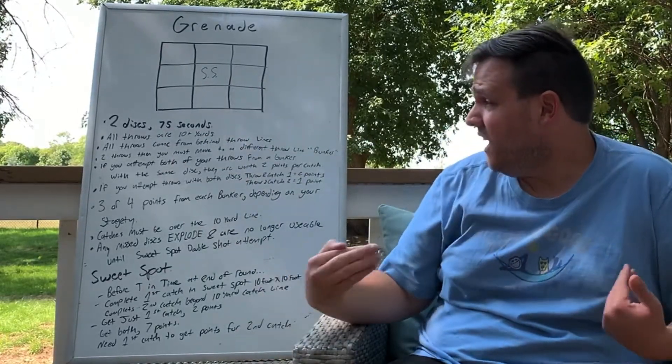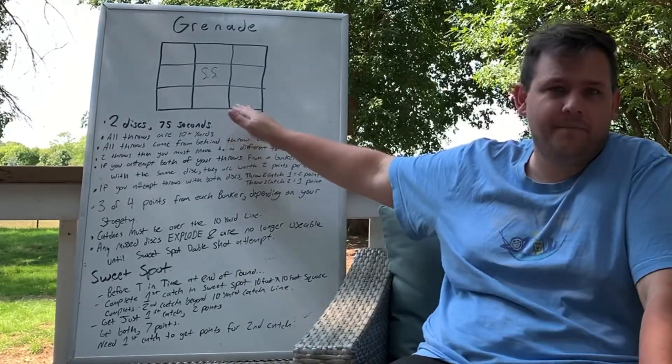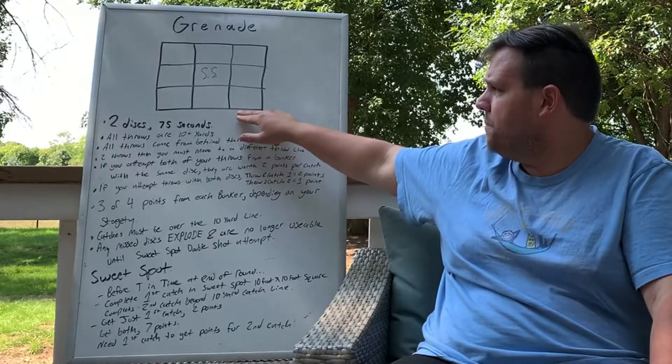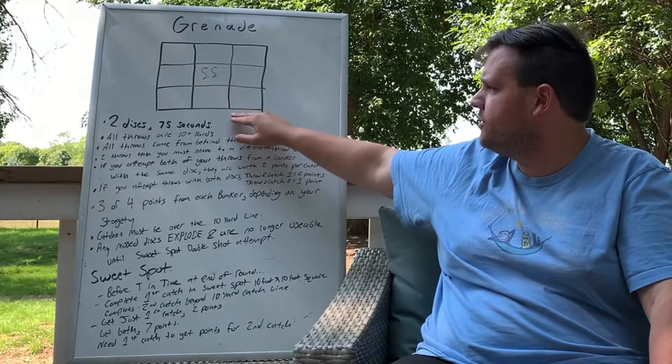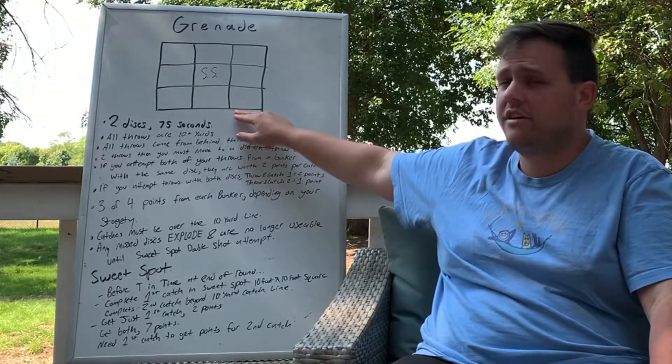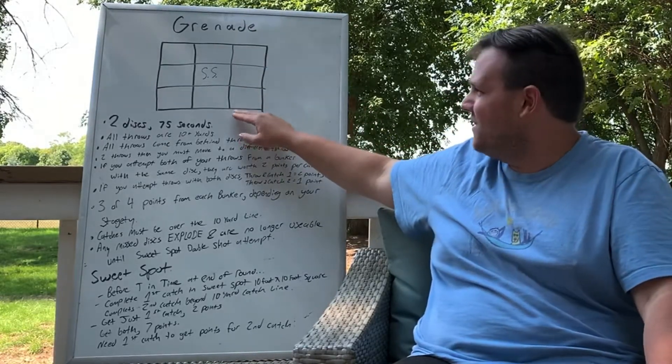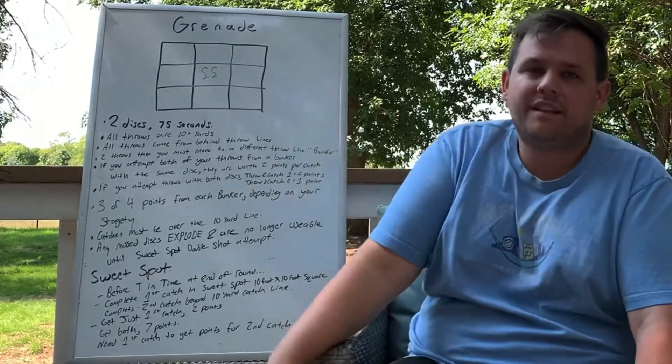All throw attempts come from behind a throwing line. You can choose whatever your throwing line is, but all throw attempts will be 10 yards or 30 feet long. If you chose this as your spot to start, you would throw it there. You wouldn't throw it here. Hopefully you throw it beyond there. There's no out of bounds, it just needs to be beyond the line.